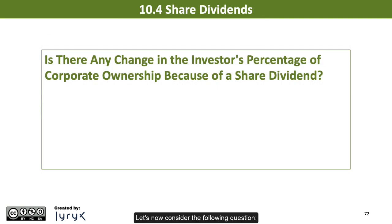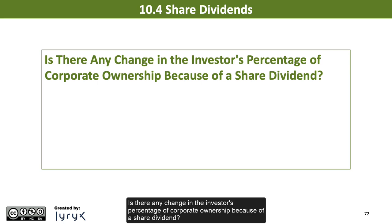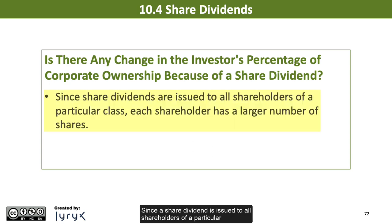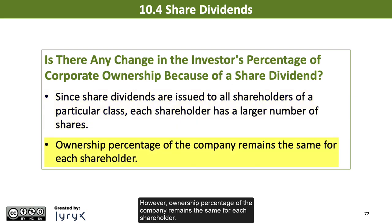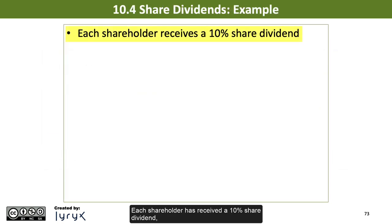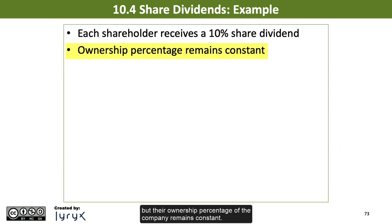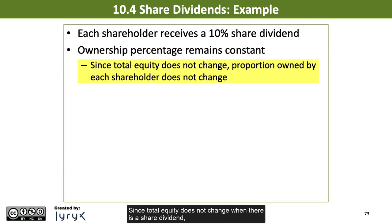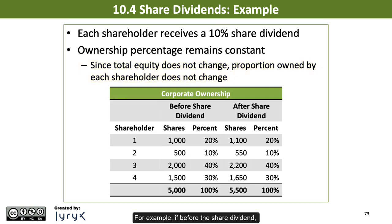Let's now consider the following question: Is there any change in the investor's percentage of corporate ownership because of a share dividend? Since a share dividend is issued to all shareholders of a particular class, each shareholder ends up with a larger number of shares. However, the ownership percentage of the company remains the same for each shareholder. Each shareholder has received a 10% share dividend, but their ownership percentage of the company remains constant. Since total equity does not change when there is a share dividend, the proportion owned by each shareholder does not change.